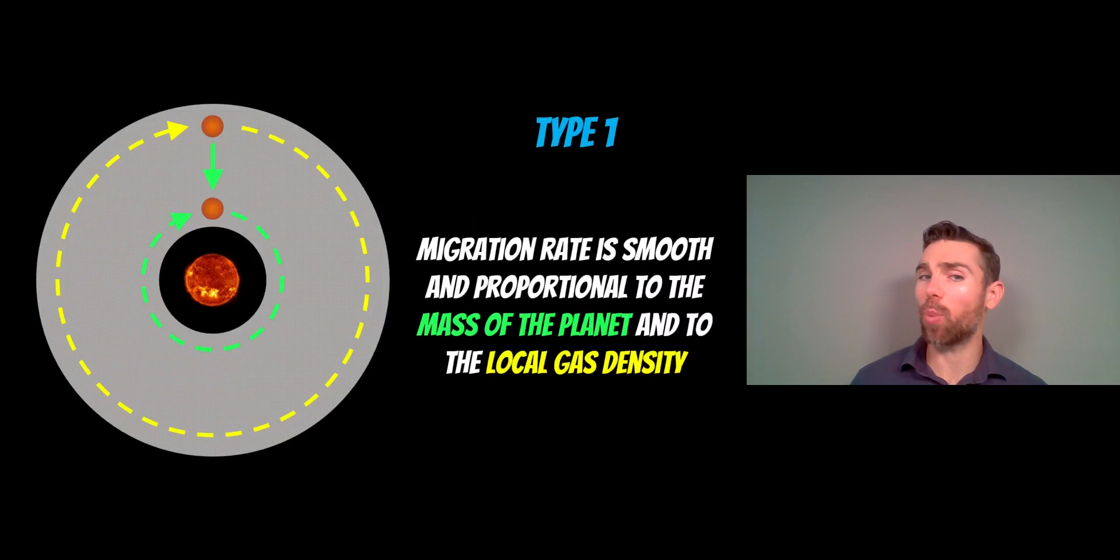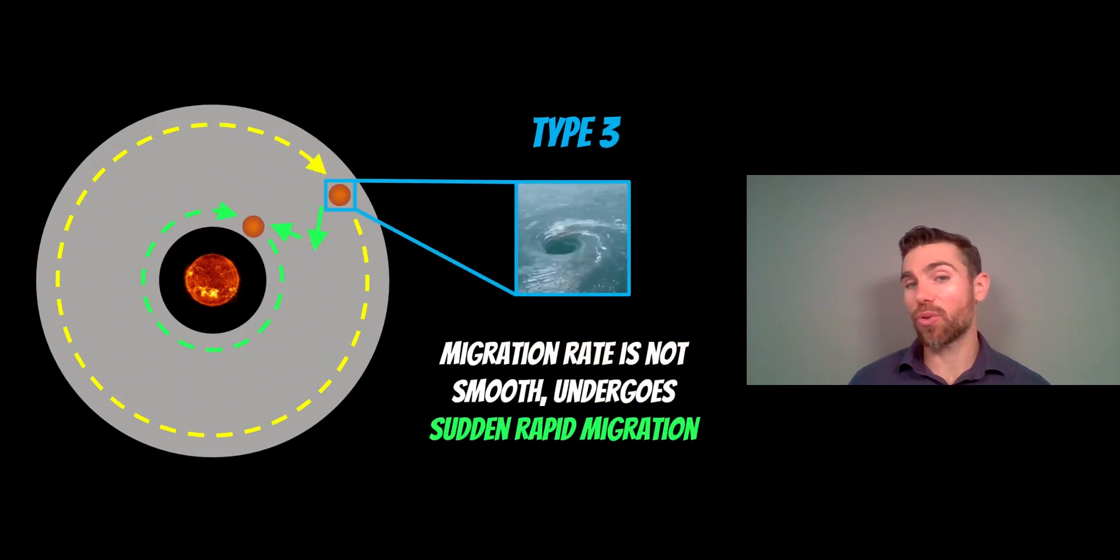So in Type 1, the migration rate was fairly smooth. As it moved inwards, because it was typically an inward migration in most cases due to the imbalance of the inner and outer spiral waves, it's a fairly smooth process. It doesn't have sudden movement and it doesn't change massively. So it's a fairly smooth inward movement, basically, or migration rate.